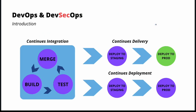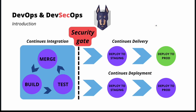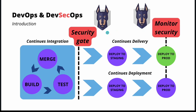Looking again at the DevOps pipeline, we will have a security gate after continuous integration, before pushing changes to continuous delivery or continuous deployment. And once the application reaches production, we can also monitor security there with proper monitoring tools.